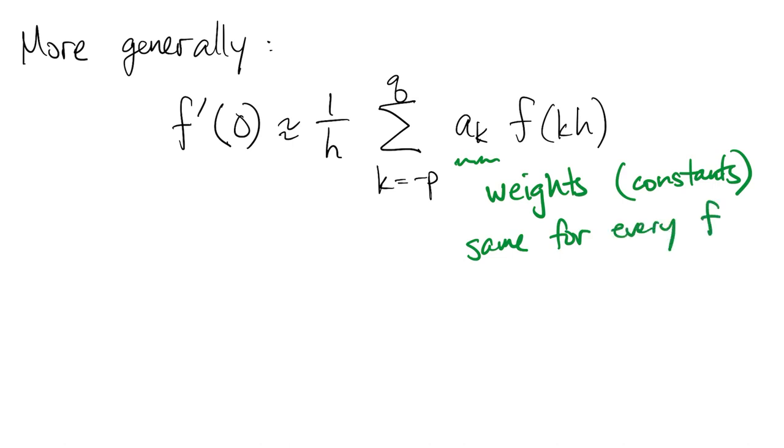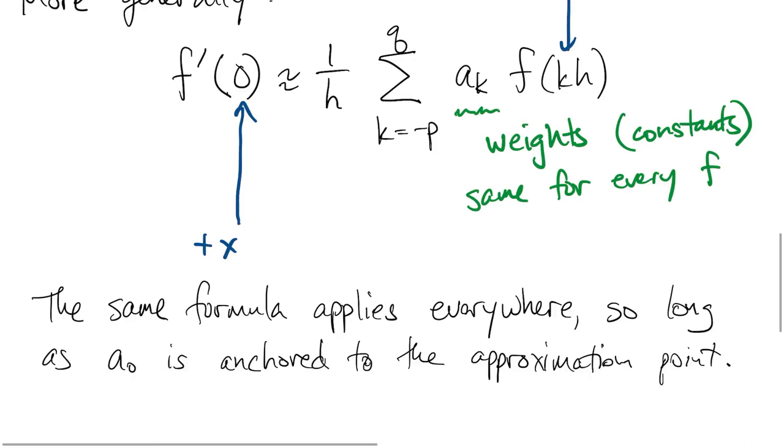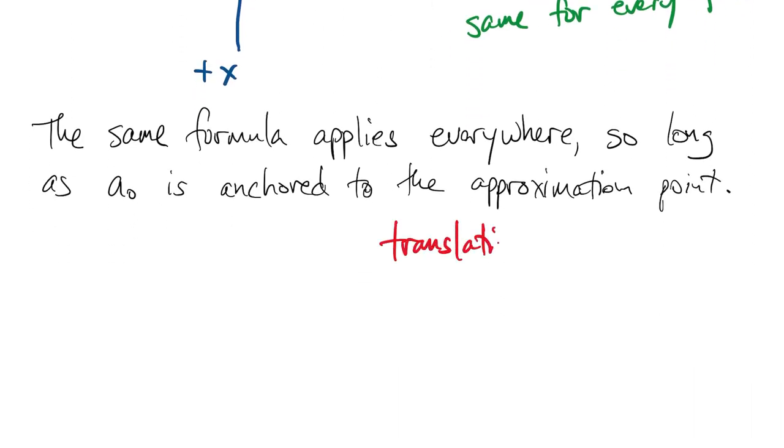The same formula works to find f prime at any value of x. We just add x to the argument of f prime, as well as all the arguments of f values. Nothing else needs to change. So we can write all these formulas just for the case of x equals zero. Remember that the weight a zero is always anchored to the spot where we want to get f prime. This property is called translation invariance, or shift invariance.